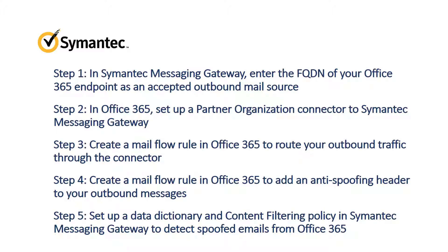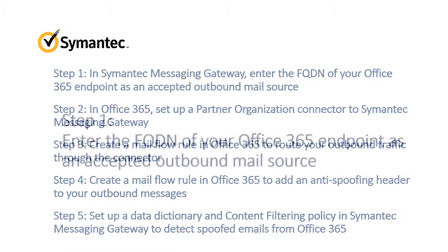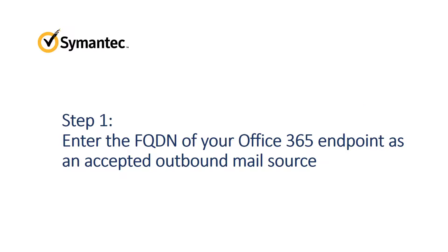Now let's look at each step in detail. In Step 1, enter the fully qualified domain name of your Office 365 endpoint as an accepted outbound mail source in Semantic Messaging Gateway. You must do this first to ensure that Semantic Messaging Gateway accepts outbound mail as soon as Office 365 begins to send it.